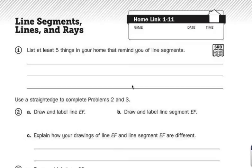Now number 2 says use a straightedge to complete problems 2 and 3. So you're going to want to grab a ruler or something to make straight lines. Letter A, draw and label line EF.